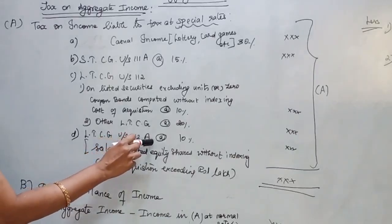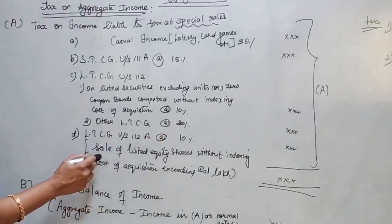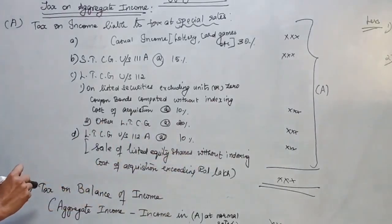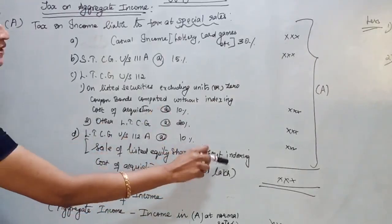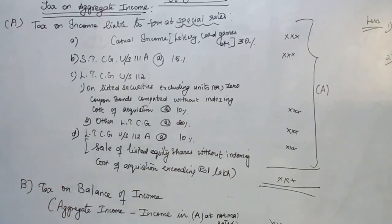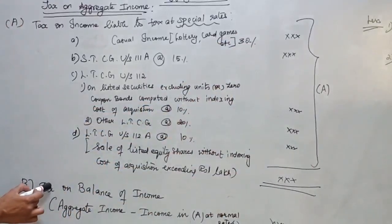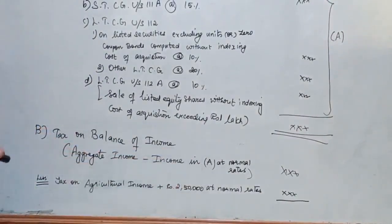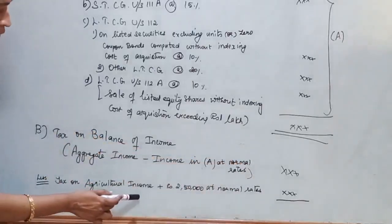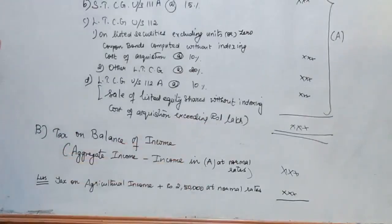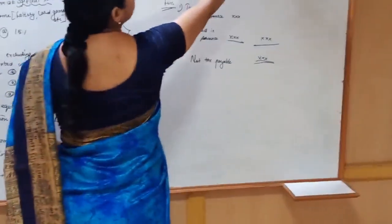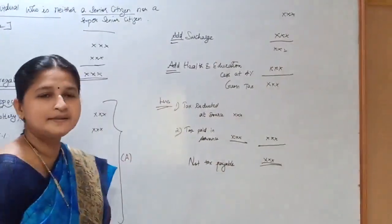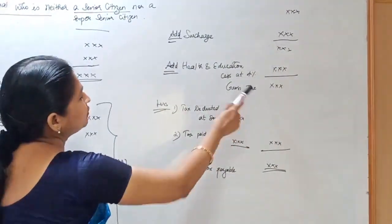Long-term capital gains under Section 112A — the rate of tax is 10%. This applies in the case of sale of listed equity shares without indexing the cost of acquisition, where the sale of listed equity shares exceeds Rs. 1 lakh. After calculating tax on special rate incomes, calculate the tax on balance income: aggregate income minus income taxed at special rates. Then deduct tax on agricultural income plus Rs. 2,50,000 at normal rates. To the balance, add surcharge and health and education cess at 4%.